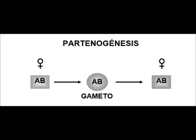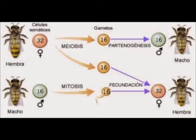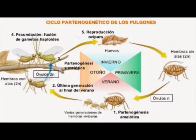Parthenogenesis is another type of reproduction of virgin origin: the ovule, through a signal, begins to divide as if it had been fertilized even though it has not. It begins to form a new individual. We find meiotic parthenogenesis, where meiosis is produced and then mitosis of a haploid individual — as occurs in bees — and ameiotic parthenogenesis, where meiosis is not produced because organisms are directly diploid and are clones of the parents, as in the case of the dragonfly.